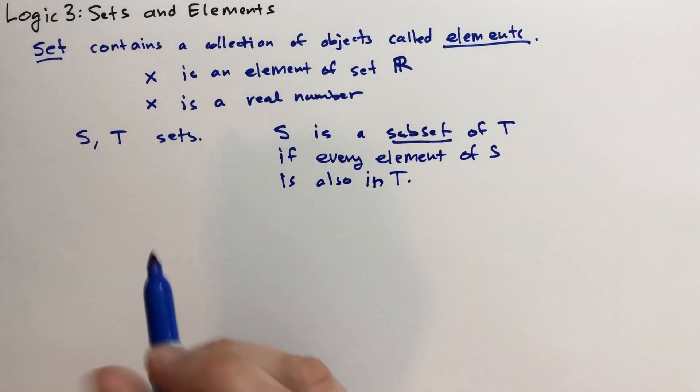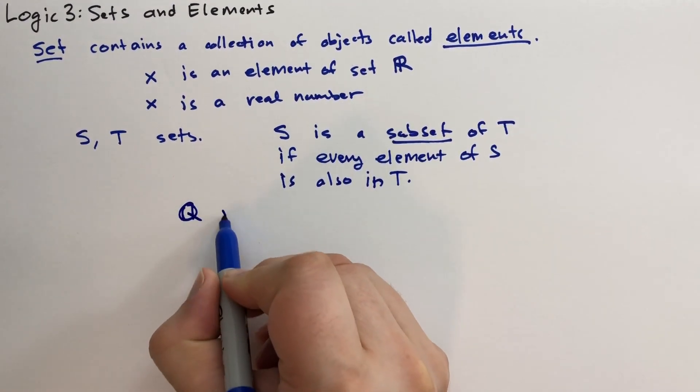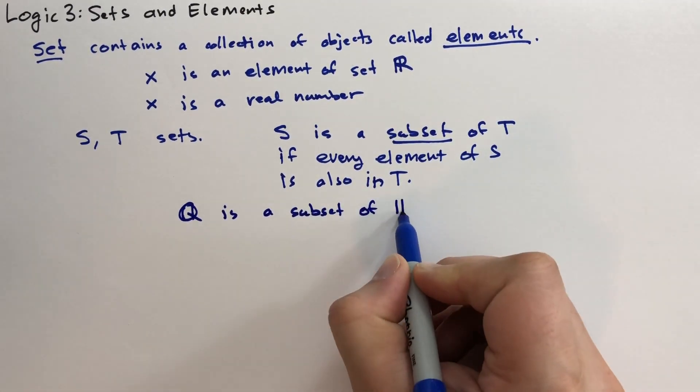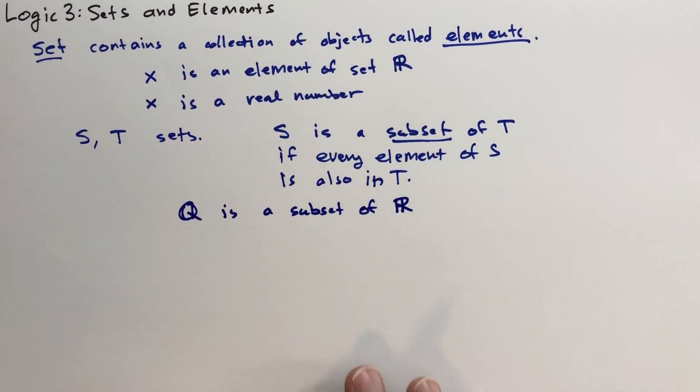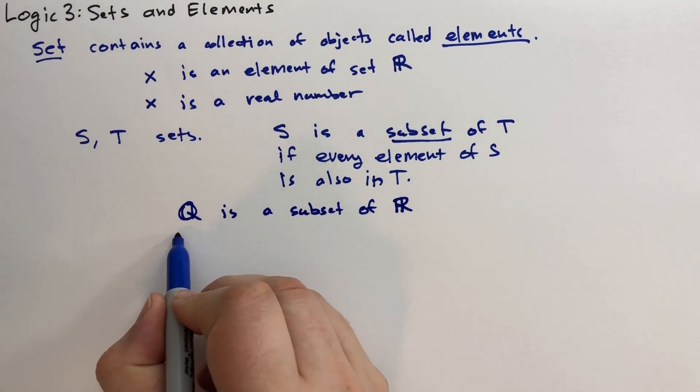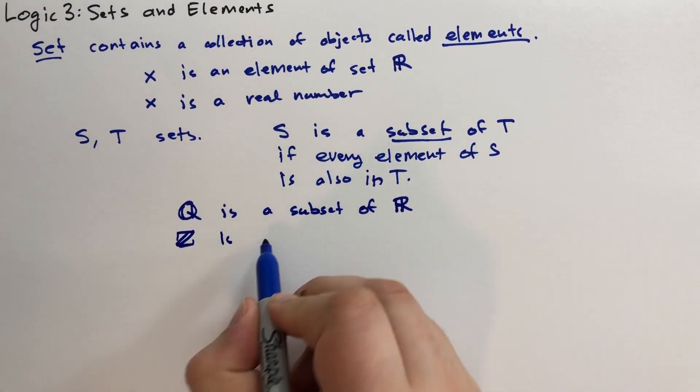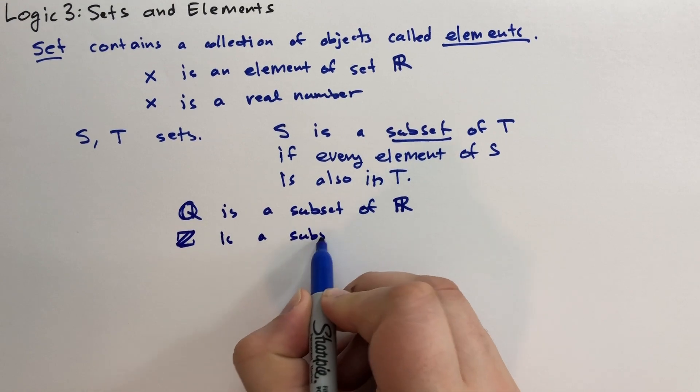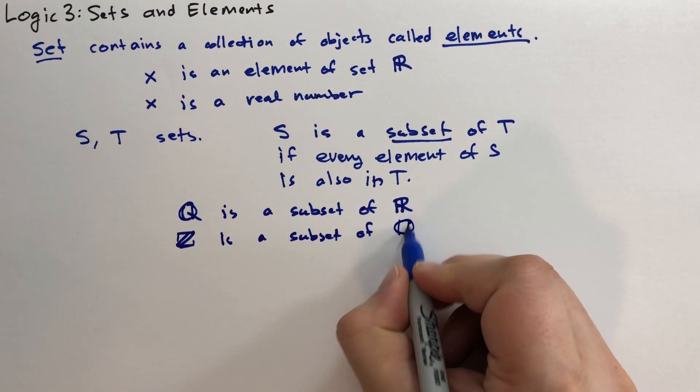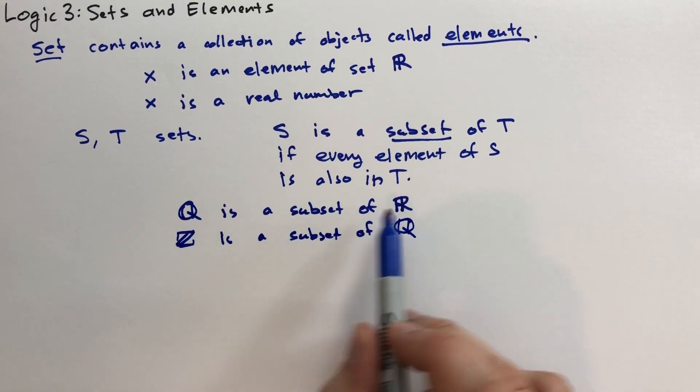So we could say the set of all rational numbers, I think that's called Q, Q is a subset of R. All rational numbers are in the set of real numbers. We could say the set of all integers, I think it's Z. Z is the magic letter for integers, is a subset of Q and R. So we'll just write Q, because this would imply it's also a subset of R. If Z is in Q, and all of Q is in R, then Z is also in R.